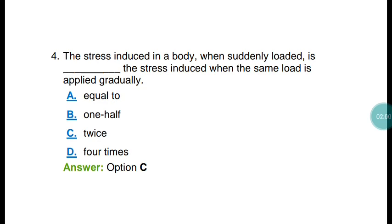Question number four: The stress induced in a body when suddenly loaded is how many times the stress induced when the same load is applied gradually? The answer is option C — twice. The stress induced in a body when suddenly loaded is twice that of a gradually applied load, equal to 2PL upon AE.